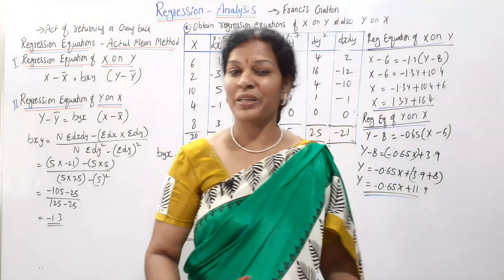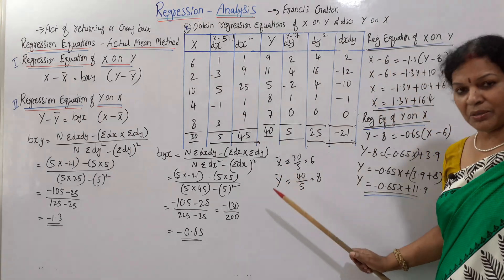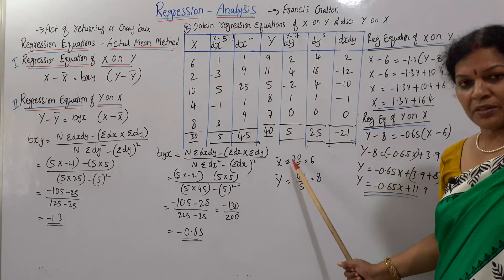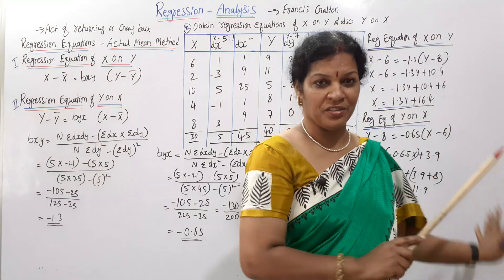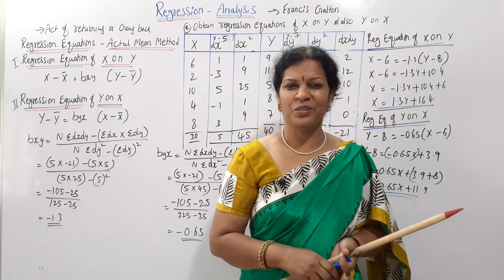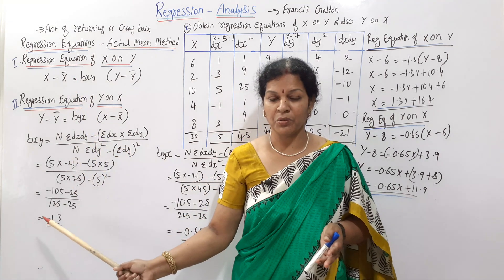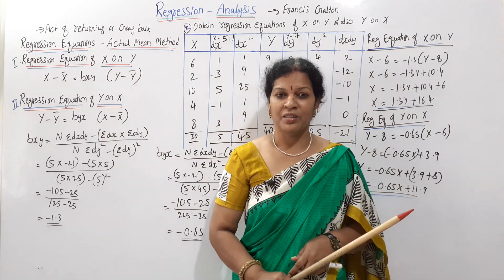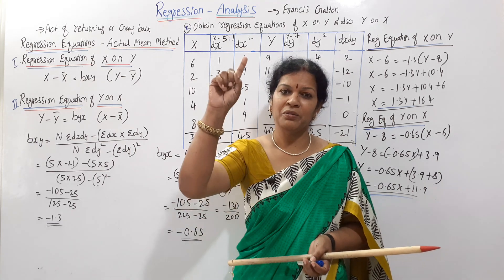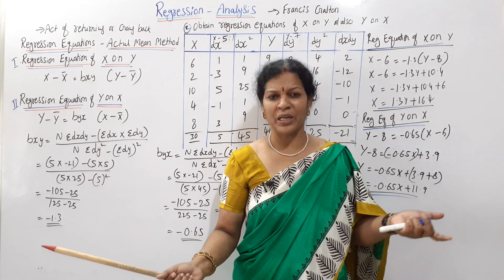We use x minus x-bar and y minus y-bar along with x-bar and y-bar to write the regression equations. Once we have bxy and byx values and the means x-bar and y-bar, we can form both regression equations. In this assumed mean method, the formula takes a little more time to compute, but the approach is straightforward.